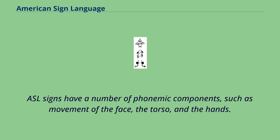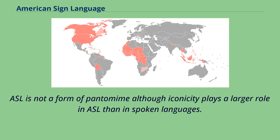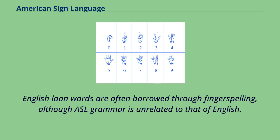ASL signs have a number of phonemic components, such as movement of the face, the torso, and the hands. ASL is not a form of pantomime, although iconicity plays a larger role in ASL than in spoken languages. English loanwords are often borrowed through fingerspelling, although ASL grammar is unrelated to that of English.